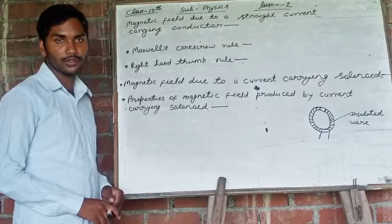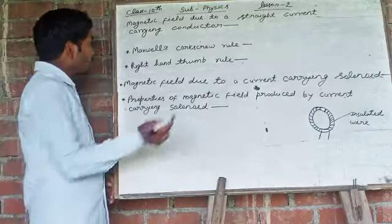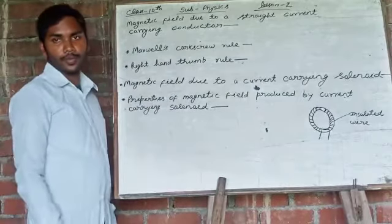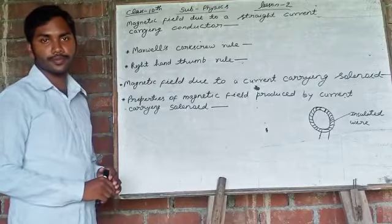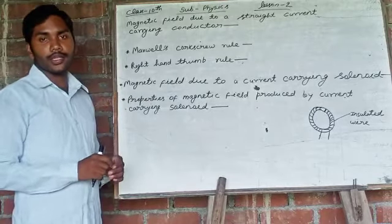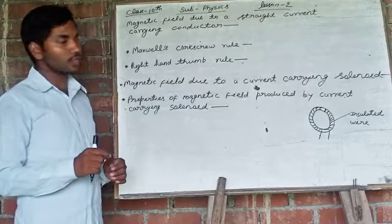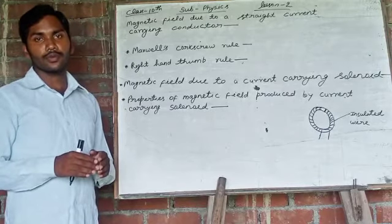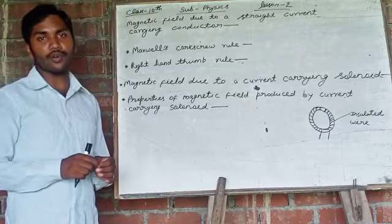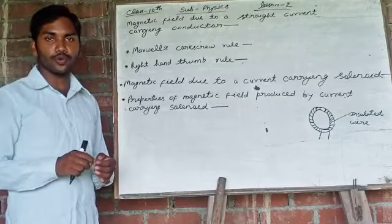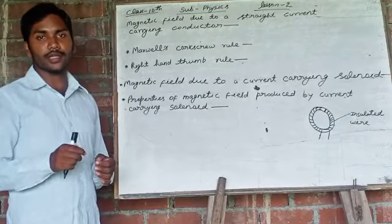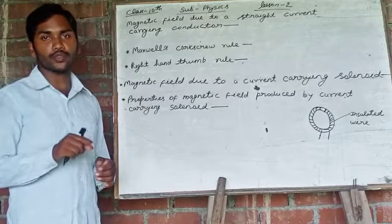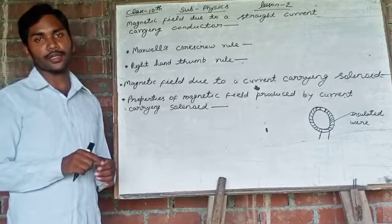For this, there is a rule which is known as Maxwell's cork screw rule. Suppose there is an imaginary cork screw. The forward movement of the screw shows the direction of current, and then the rotation of the thumb will show the magnetic field direction.